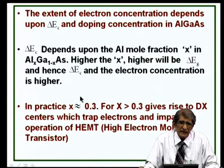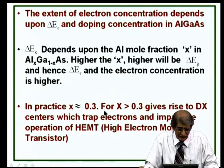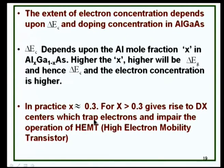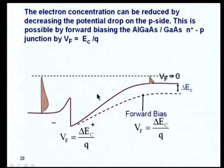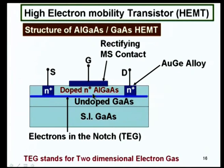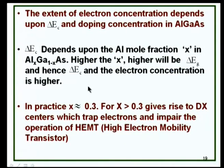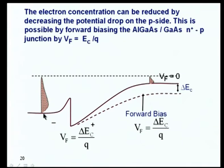In practice, very high aluminum concentrations are avoided because aluminum is unstable, gets oxidized, and introduces trap centers that affect mobility. The highest practical value of x is about 0.3, giving a band gap of about 1.9 eV. An important question is: how do you turn off the device? What voltage must be applied to deplete the channel and remove those electrons? That defines the threshold voltage.